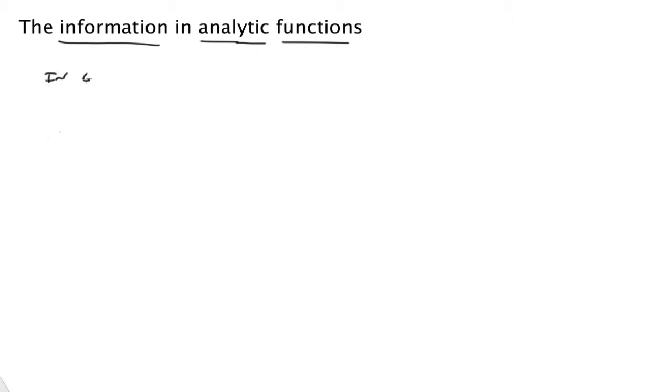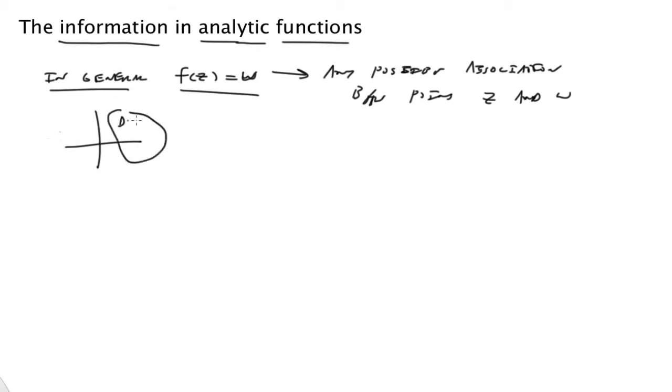So in general, f(z) = w. If we don't think of analytic functions, but just think of any possible association, this is any possible association between points z and w. For instance, if I have some domain that's in the z-plane, and then I have this map that goes to the w-plane and it creates some image, which we'll call f(D), there's this association.